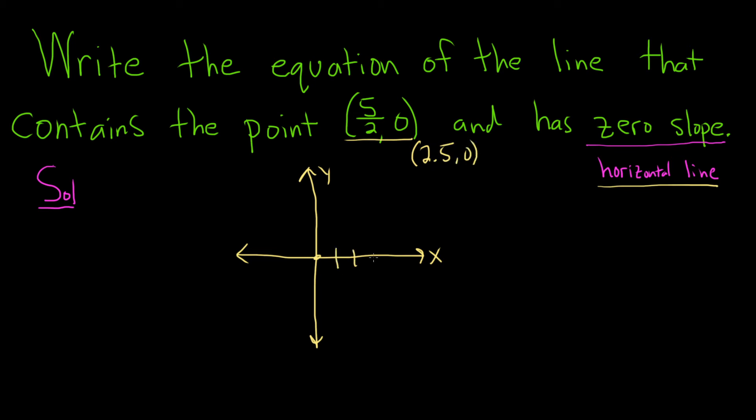So if this is 1, 2, 3, your point is 2.5 units away, so it's like right here. So there's our point. That's our 5 halves comma 0.